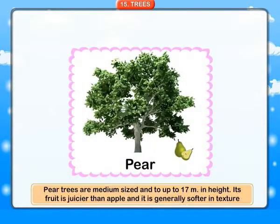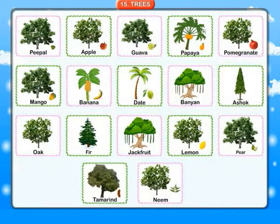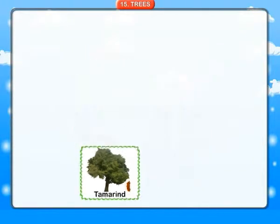Pear: pear trees are medium-sized and grow up to 17 meters in height. Its fruit is juicier than apple and is generally softer in texture. Tamarind: a tree of the pea family, having pods with sticky brown acidic pulp used as a flavoring substance.